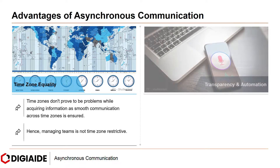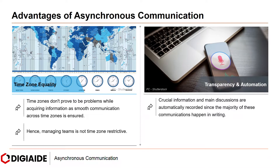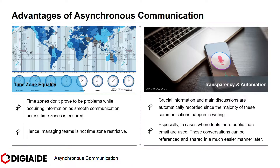And finally, transparency and automation. Crucial information and main discussions are automatically recorded since the majority of these communications happen in writing, especially in cases where tools more public than email are used. For instance, Google Docs — those conversations can be referenced in a much easier manner later.